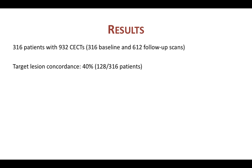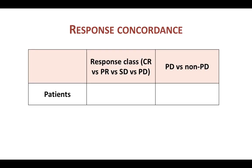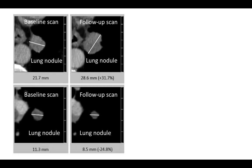The target lesion concordance was actually not good at all — only 40% of patients had concordant target lesions selected by the three radiologists who interpreted their studies independently. Response class concordance was also not great: only 59% of patients had response class concordance across the three radiologists. When it came to the most important question of progression versus non-progression, only 73% of patients had concordant response classification.